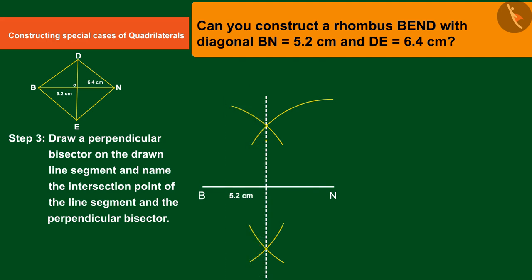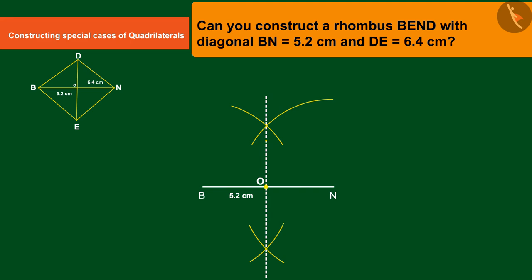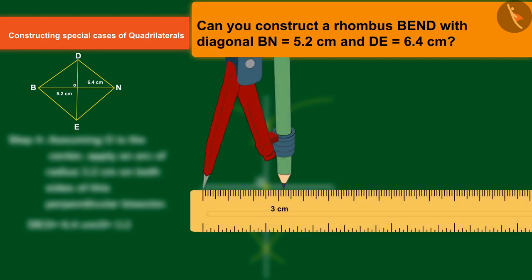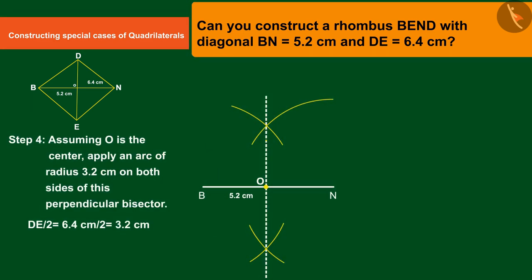Which will intersect BN at point O. Since the diagonals bisect each other, we draw an arc on both sides of the perpendicular bisector on BN taking O as the center of measure half of DE, 3.2 centimeters, with radius of a measurement.